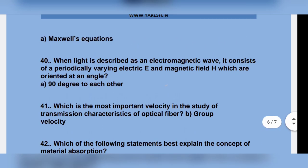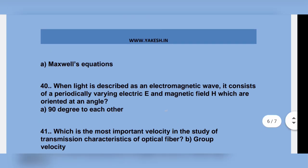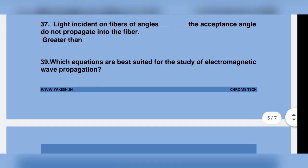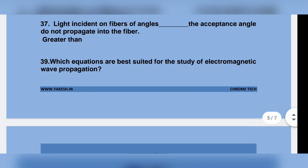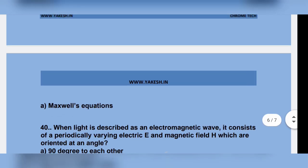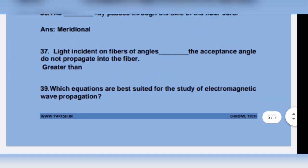When light is described as an electromagnetic wave, it consists of a periodically varying electric and magnetic field at 90 degrees to each other. Which equations are best suited for the study of electromagnetic wave propagation? Maxwell's equations.